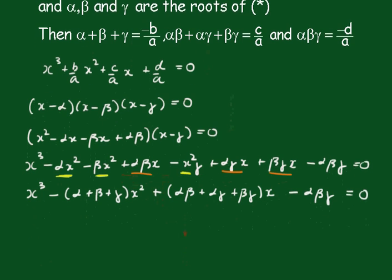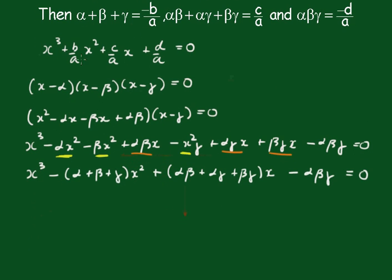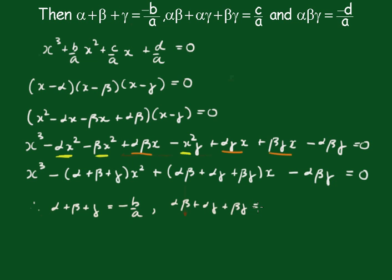Now we can see that the coefficient of X² is B/A, so therefore alpha + beta + gamma = -B/A. We can see that alpha·beta + alpha·gamma + beta·gamma equals C/A, and of course finally alpha·beta·gamma = -D/A.